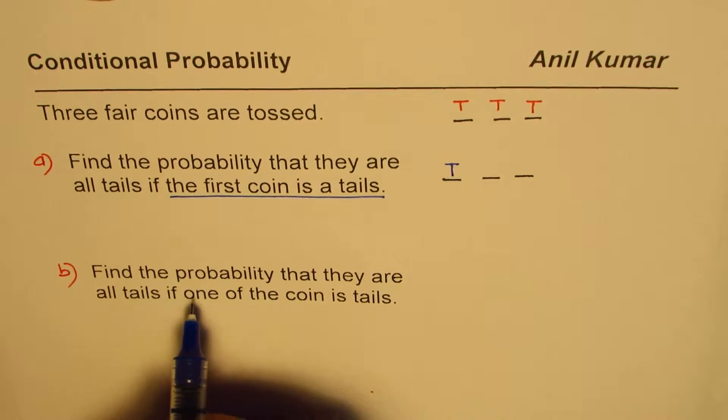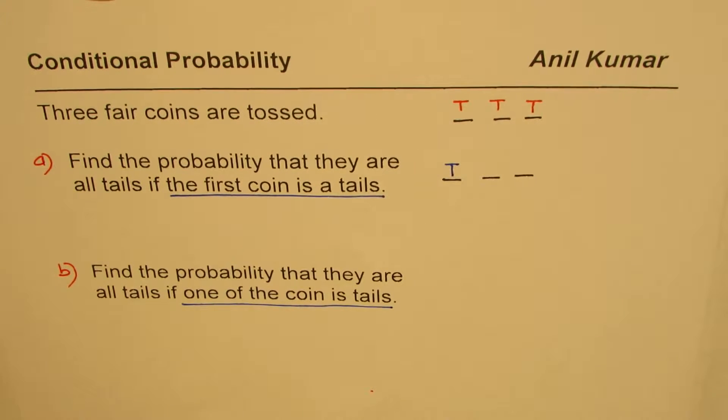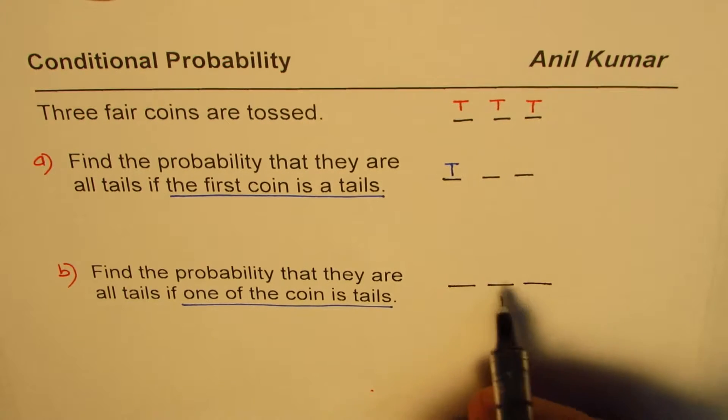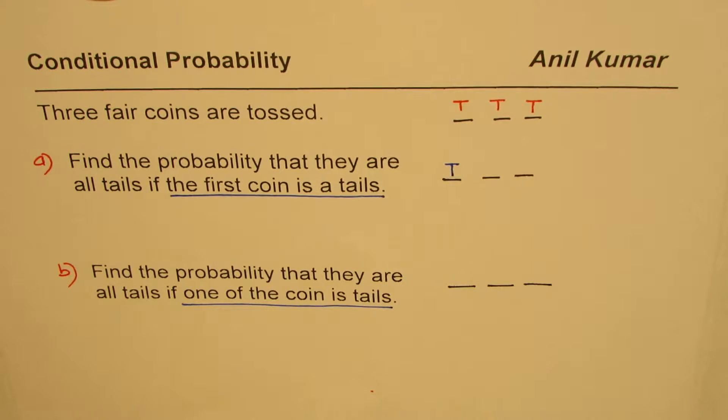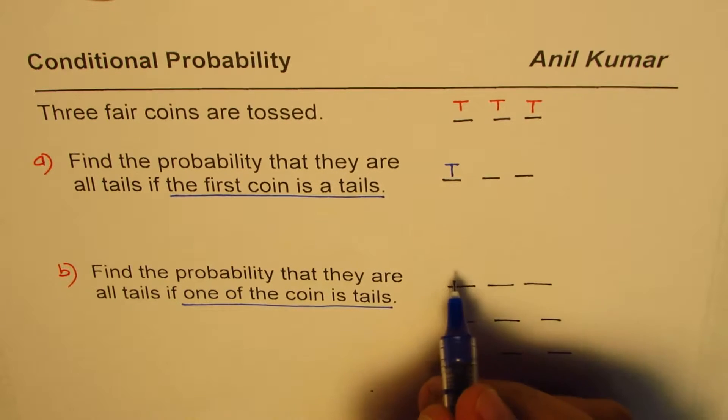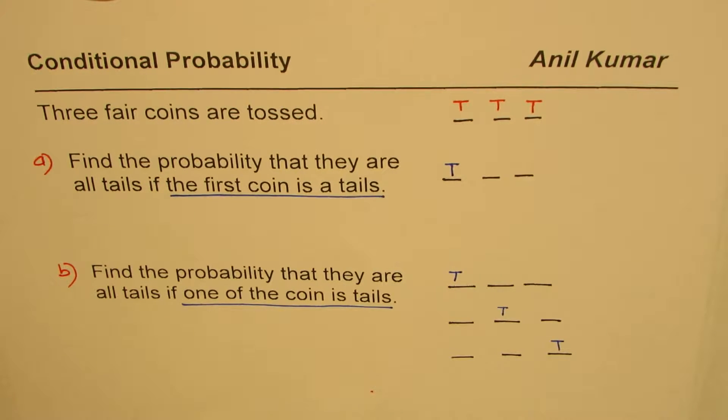they are all tails if one of the coins is tail. So any one of them, not just the first one. Any one of them could be tail. So you could have these positions - think like this: it could be tail here or here or here. So any one of them could be tails.